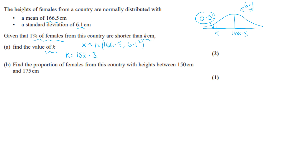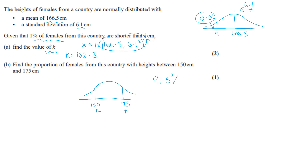In part b, the proportion of females with heights between 150 and 175 — you put 150 as your lower limit and 175 as your upper limit and use the same values for mean and standard deviation, and this comes out for one mark to be 91.5%.